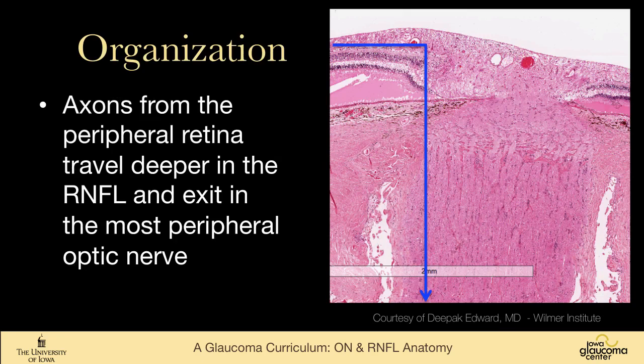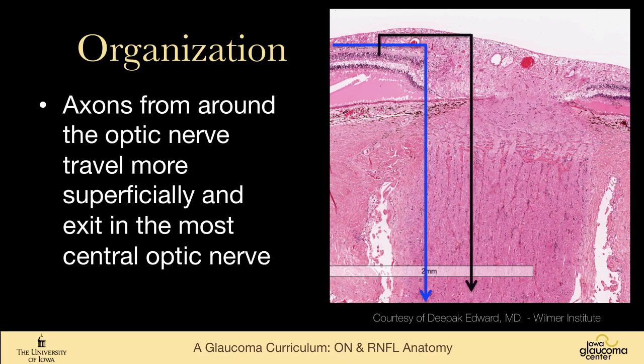The axons from the most peripheral retina travel deeper in the retinal nerve fiber layer and exit in the most peripheral portion of the optic nerve, while those closer to the optic nerve are more superficial and travel down the central portion of the optic nerve.